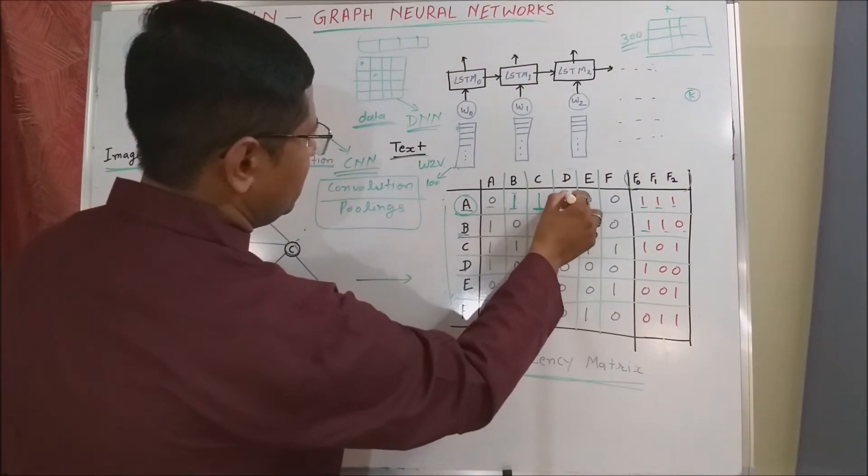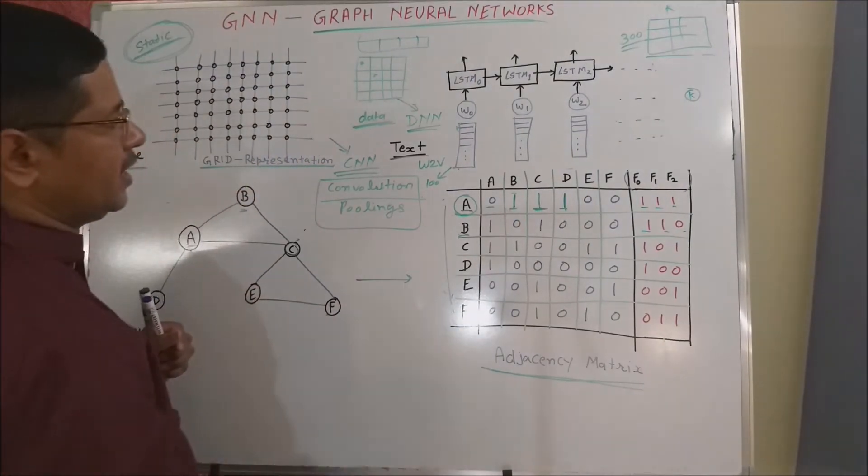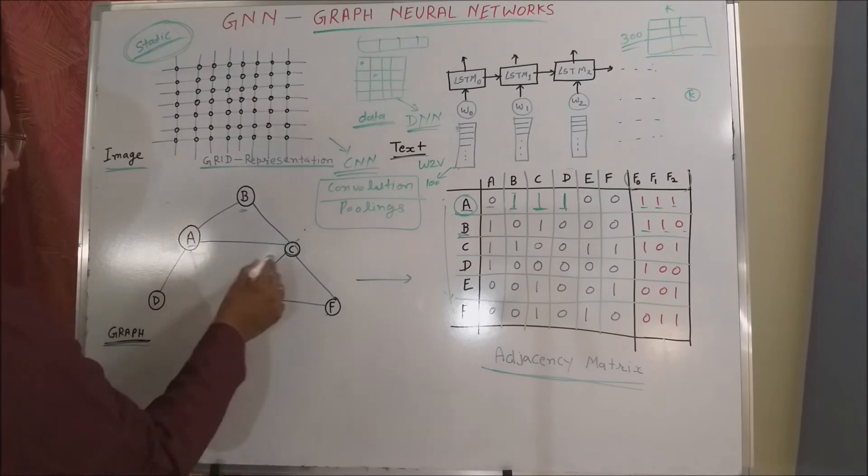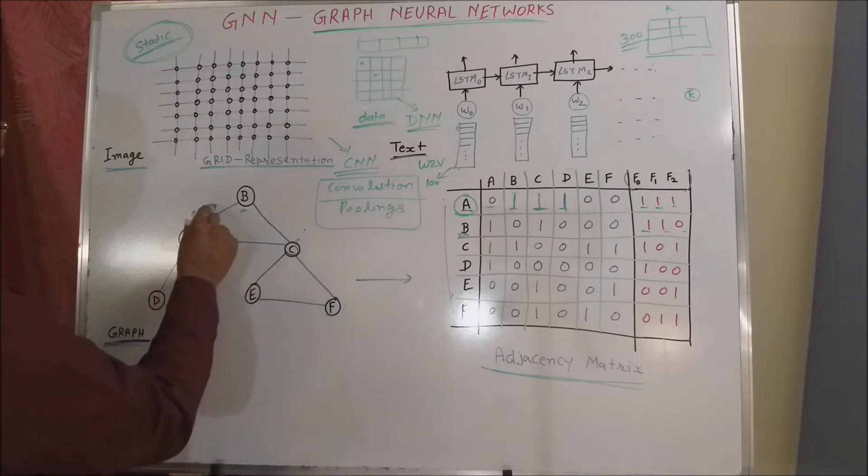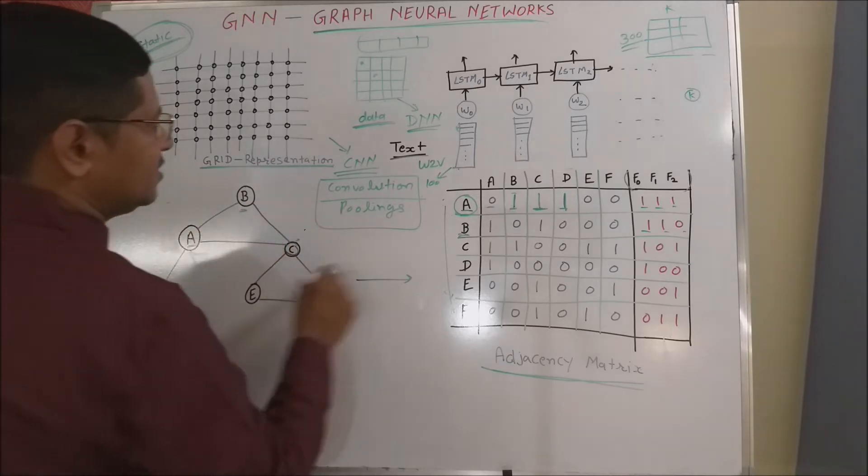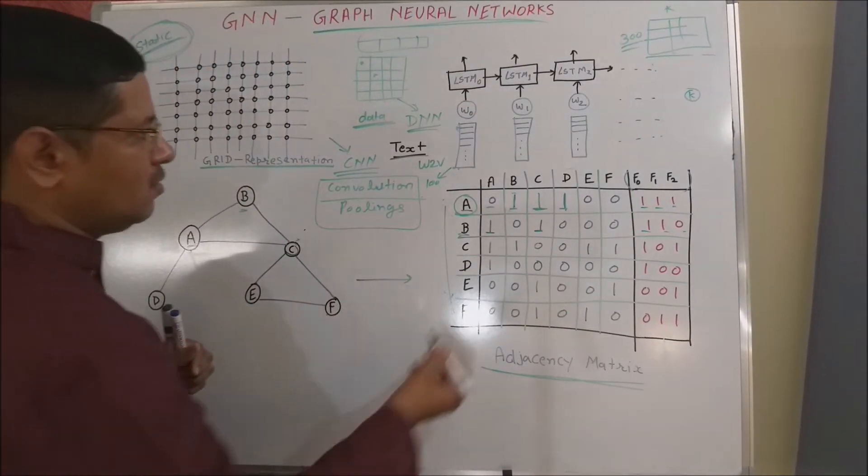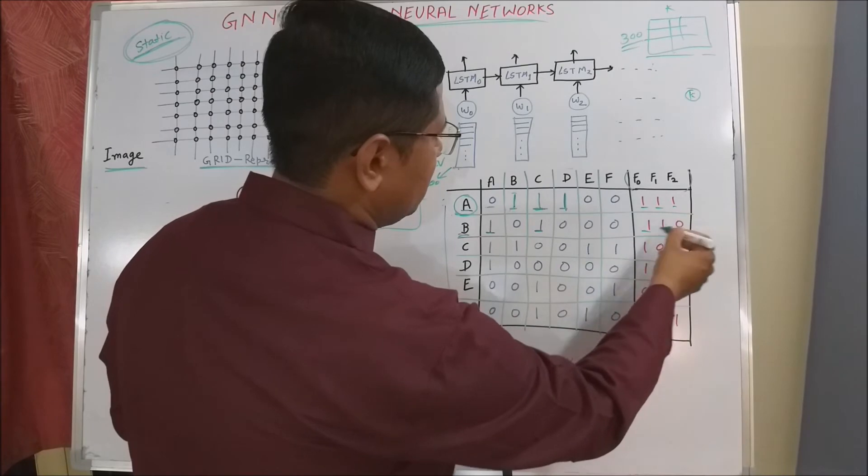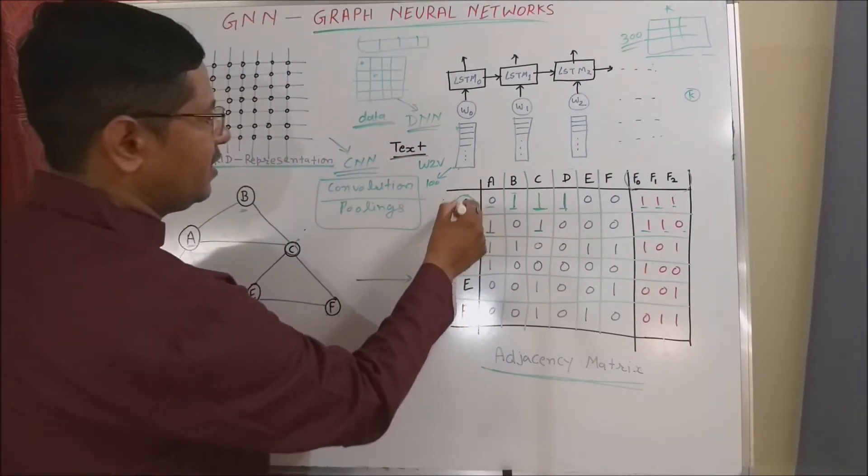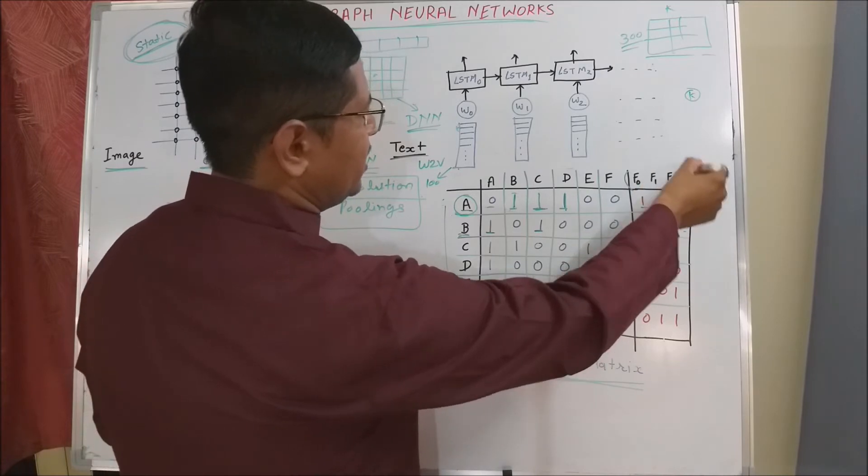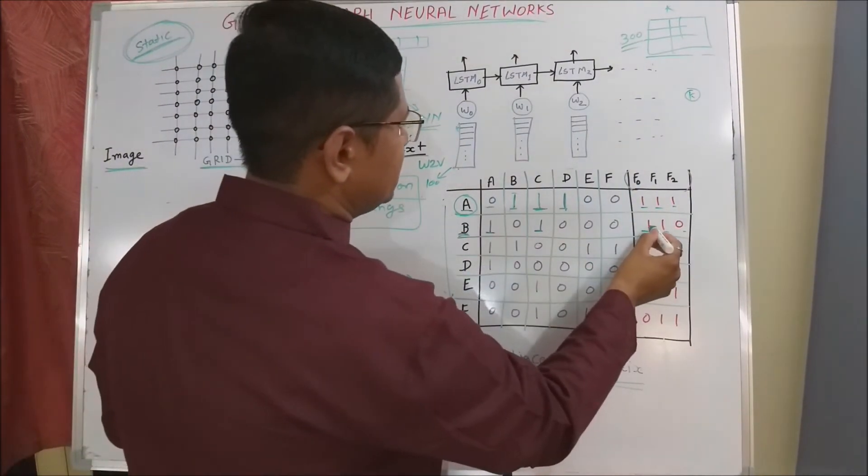Similarly we have identified the connected edges for b. Only two edges are there with a and c, so here we use the one and rest of them are zero. Now we have some features also. For node a we have features one one one, three features f0 f1 and f2. Similarly for node b we have three features one one and zero. So for all nodes we have some features.